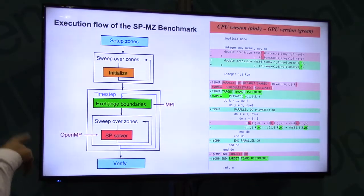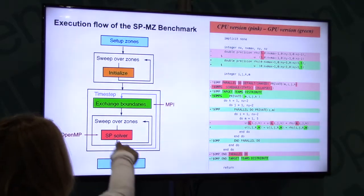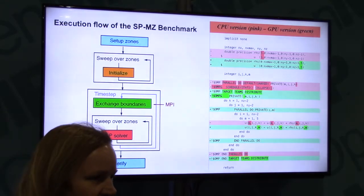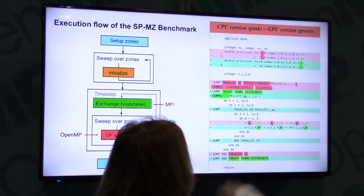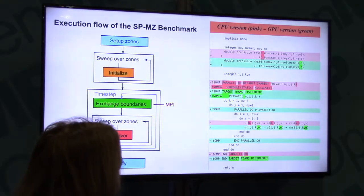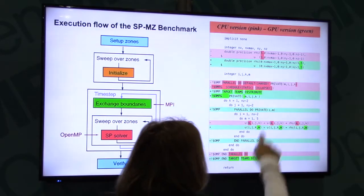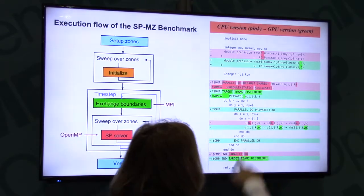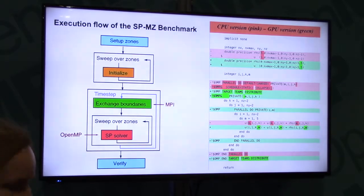Here's the execution flow of the SPMZ benchmark. It's nice because it self-checks itself, so we were able to see all along the way that we weren't introducing any mistakes. We focused on OpenMP and the solver. The Bitbucket tools were also useful — when we committed our changes, we could see exactly what was changed. For instance, the new version is in green, the old version in pink: a parallel do associated with the CPU version and the target teams version for the GPU.